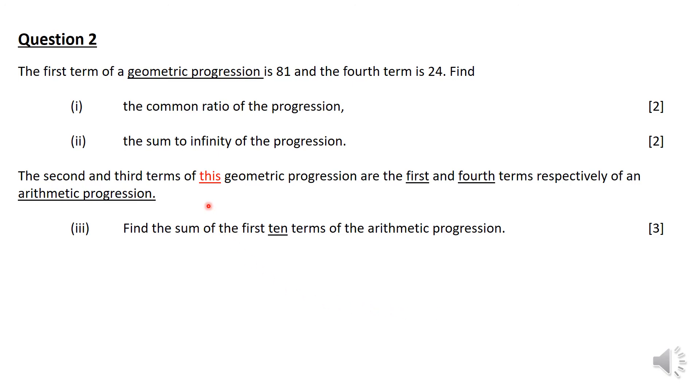There is another part. They say the second and third terms of this sequence, and I've highlighted this because we are still considering this sequence. The first and fourth terms respectively of another progression which happens to be arithmetic. What you need to do is find the sum of the first ten terms of the arithmetic progression. Pause the video, attempt to solve the question.